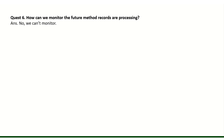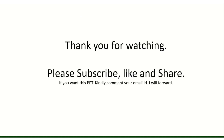How can we monitor the future method records being processed? There is no option to monitor it — for example if you are processing 10,000 records you cannot track progress. One more thing: the maximum limit of future method calls is 50 per transaction. That's all for this quick overview. If you want this PPT, please comment your email ID and I'll forward it. Please like, subscribe, and share the channel. Thank you.